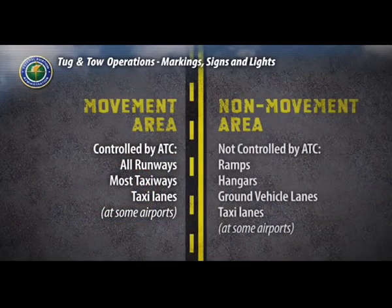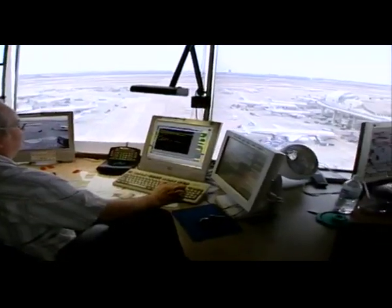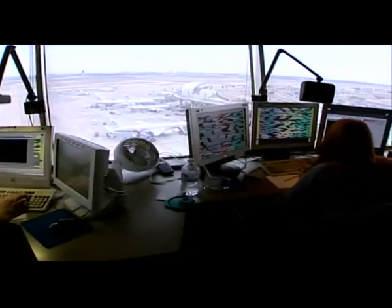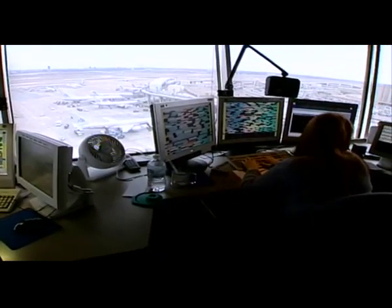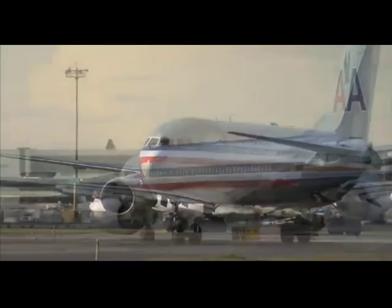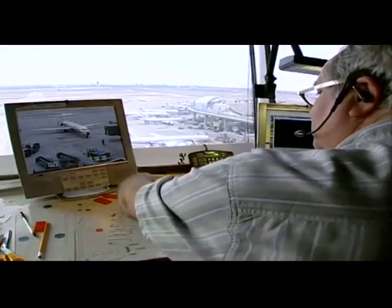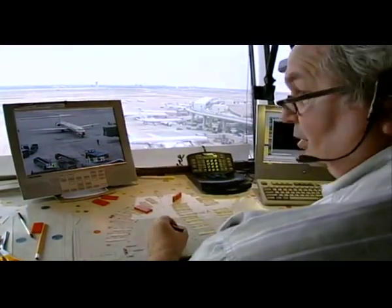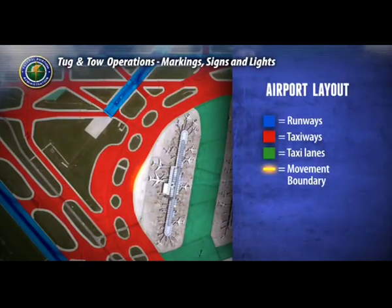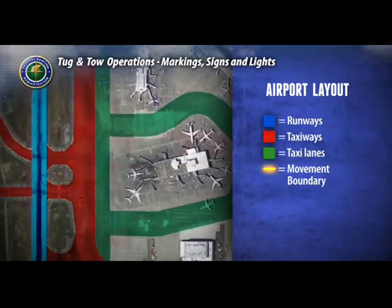Non-movement areas, such as ramps, hangars, ground vehicle lanes, and taxi lanes at some airports, are not controlled by air traffic control. Taxi lanes are like secondary streets—they provide a path for aircraft from a ramp to a taxiway. Taxi lanes may be considered movement or non-movement areas depending on their configuration at individual airports. Some airports' taxi lanes are controlled by ramp towers, so it is critical you know where your non-movement area boundary marking is located.